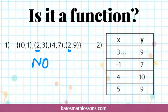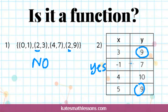Looking at the table, it assigns: 3 → 9, negative 1 → 7, 4 → 10, and 5 → 9. No input value has been entered more than once, and each one has only been assigned to one Y value, so this one is a function. It can be tempting to say it's not because you see two nines — but that's okay. That's just like the vending machine having two slots that both give pretzels. As long as every X is only paired with one Y, that's not a problem.